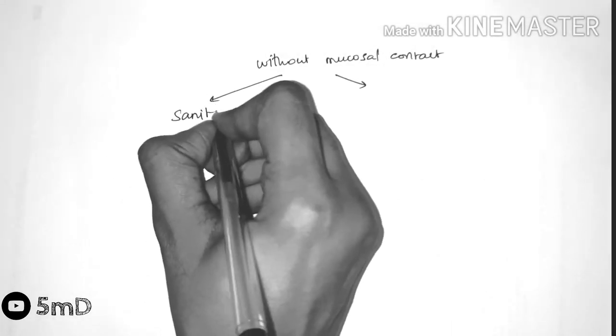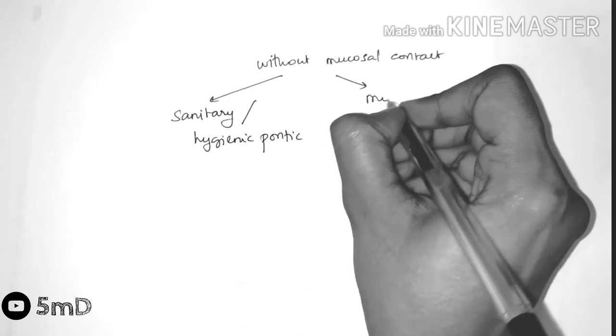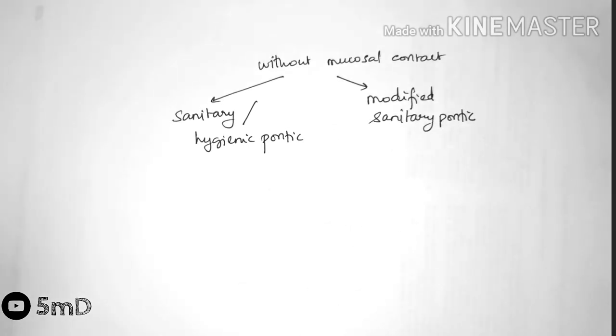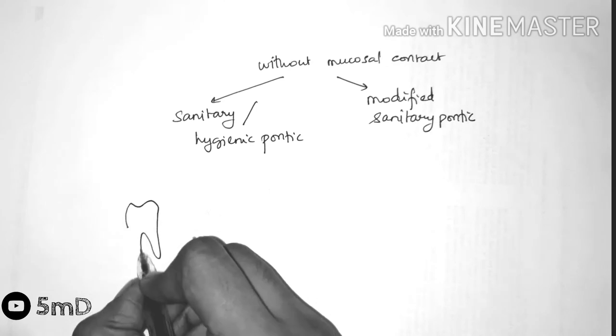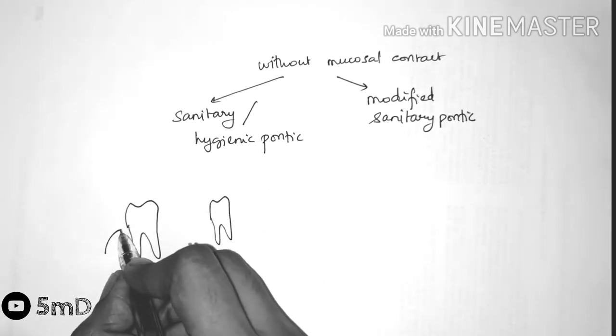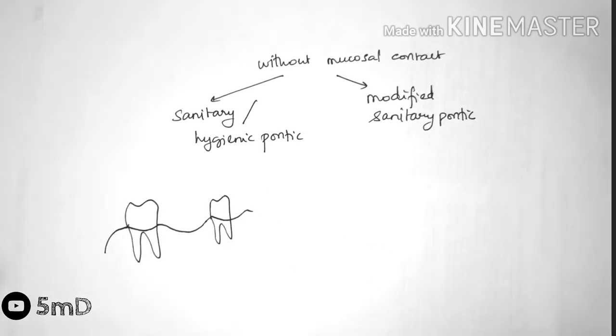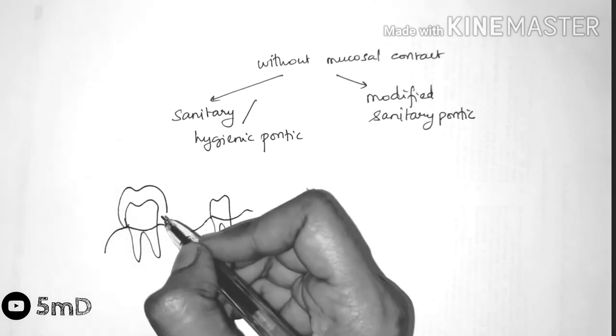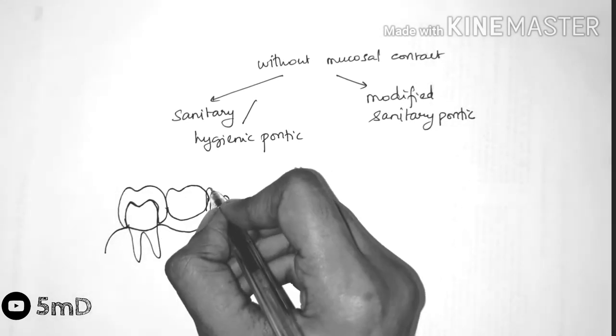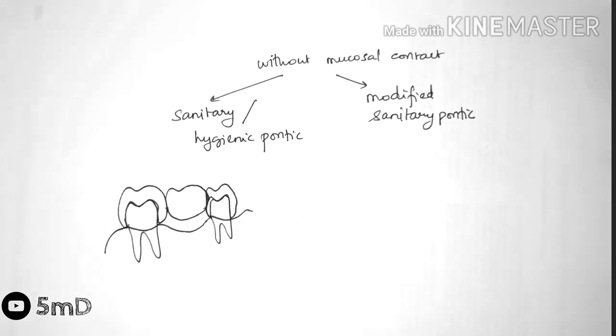Now the sanitary pontic is so called because the design is designed in such a way that it allows natural cleansing of the pontic. The pontic does not contact with the residual ridge. There is always a space between the ridge and the pontic, therefore the chances of inflammation is nil or very minimum.